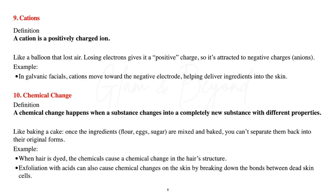Number nine, cations. A cation is a positively charged ion. Think of it like a balloon that has lost air — losing electrons gives it a positive charge, so it's attracted to negative charges, anions. In galvanic facials, cations move towards the negative electrode, helping deliver ingredients into the skin.